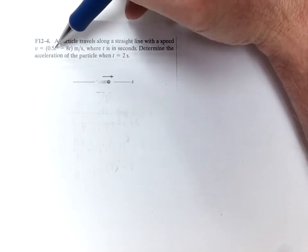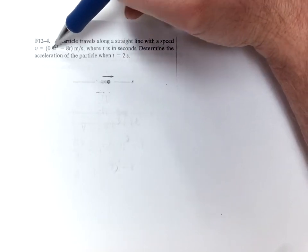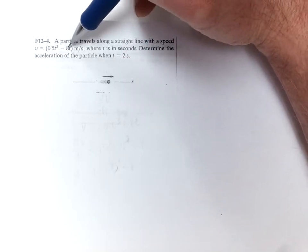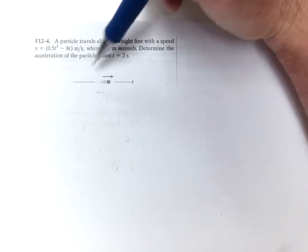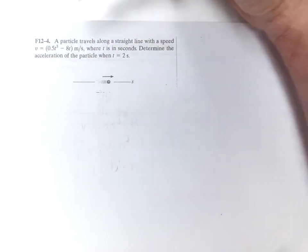So at two seconds, this is eight. So that's four. So at two seconds, this is negative 16. So yeah, we'll be all in the negative for this problem.